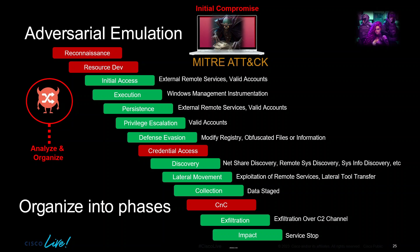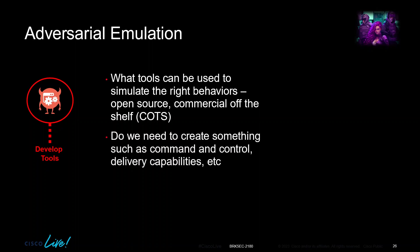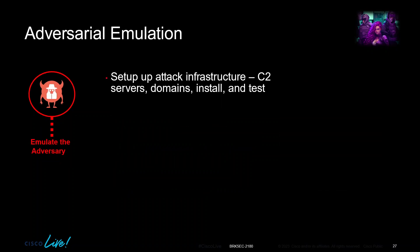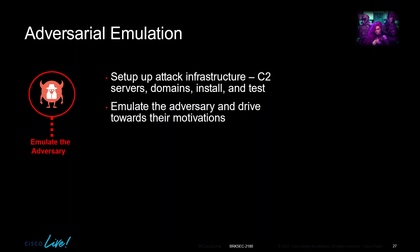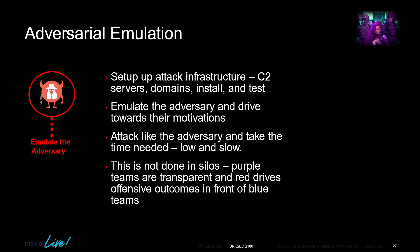We develop tools to simulate the right behaviors — either open source, commercially off-the-shelf, or custom-built command-and-control and delivery capabilities, including payloads and simulated attack infrastructure. Then we emulate the adversary by setting up C2 servers, domains, installing and testing. The goal is to act like the adversary — low and slow — not triggering alarms, not rushing through the test. This takes time and is done with red and blue teams working together, never in silos.